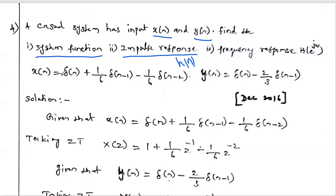Here the input and output are given. We have to find capital H(z), H(e^jω), and small h(n). From previous problems, the input-output equation was given, and from that system equation we calculated the impulse response, system function, and frequency response.